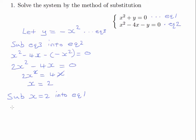So that will give us 2 squared plus y is equal to 0. Therefore 4 plus y is equal to 0, y would be equal to negative 4. So now we have x being 2, and y being negative 4.